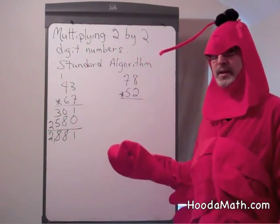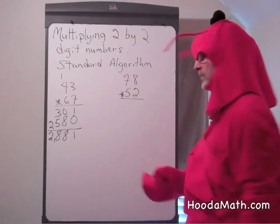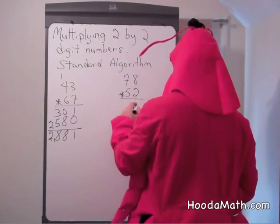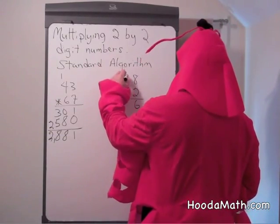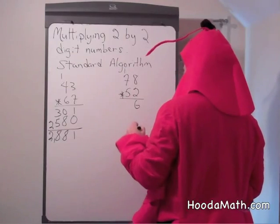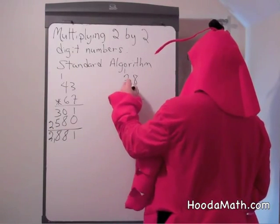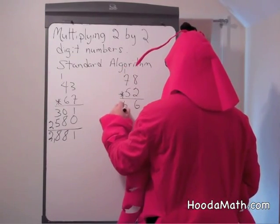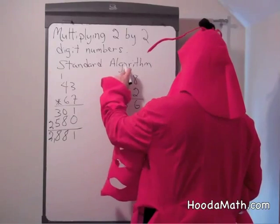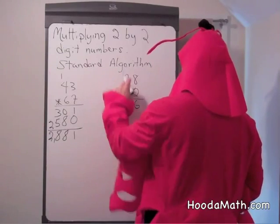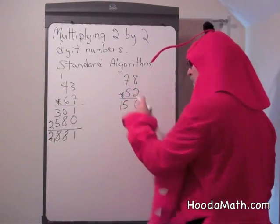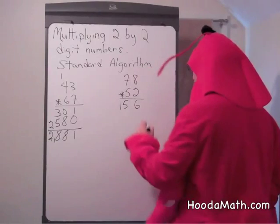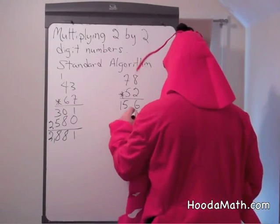Let's try it on the second example. 2 times 8 is 16. Regroup. 2 times 7 is 14, and 1 is 15. Take away the 1 here. We're multiplying by 50, so we first have to put the 0.